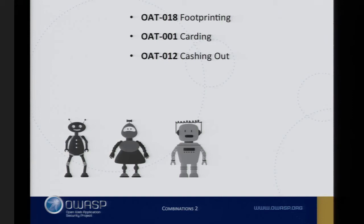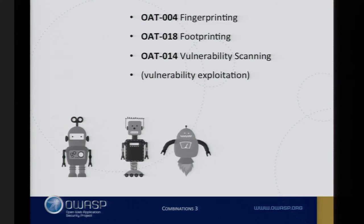Sometimes these things come more than one at a time. A criminal organization might footprint an application, try to identify where the payment systems are, then use carding to identify valid cardholder data, and then — once they've identified the valid cards — undertake cashing out to convert those stolen cards and monetize them. Another example more familiar to pen testers: doing pen testing, you initially do some fingerprinting, footprint the application, and then start doing vulnerability scanning. The exploitation itself is outside the scope because that's exploitation of individual bugs.